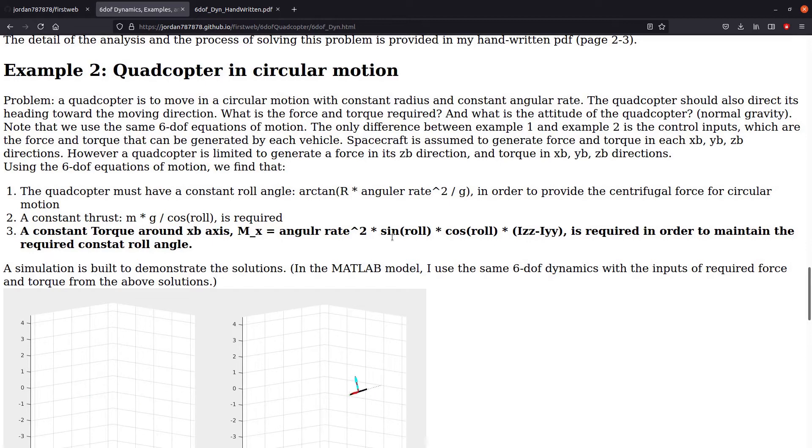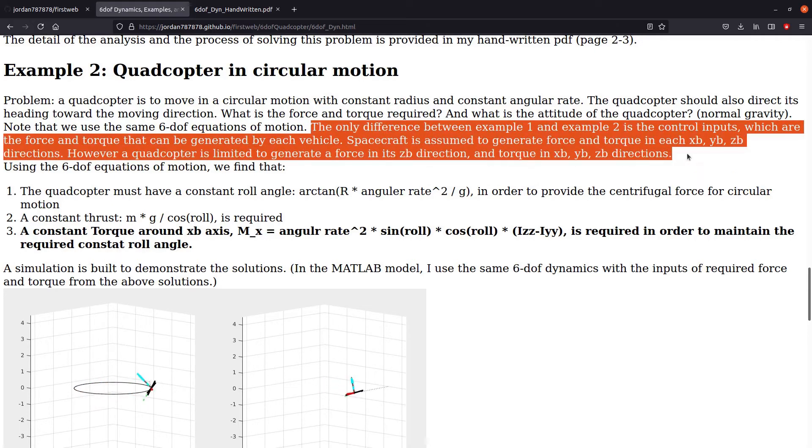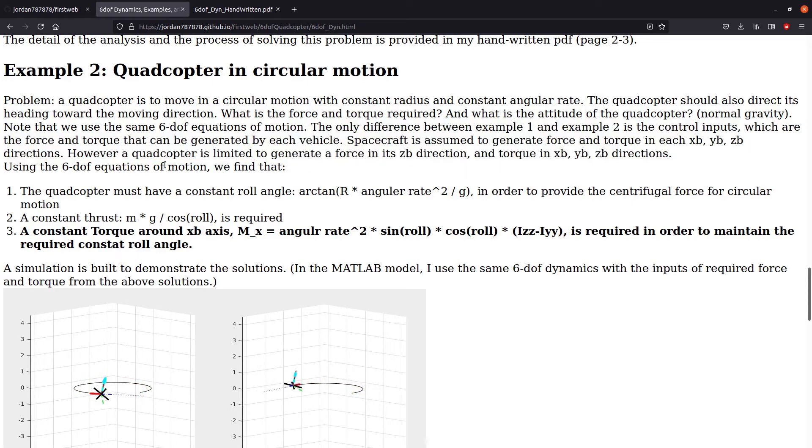Before, we tried to simulate a body in space. But what happens if we are going to simulate a quadcopter in normal gravity environment? Still, we will use the same 6DOF equations of motion. But the only difference is the force and torque that can be generated by the vehicle. The quadcopter is limited because it can only generate a force along its z-body direction.